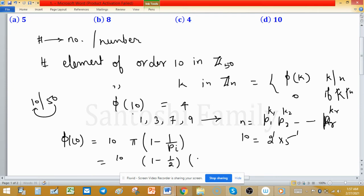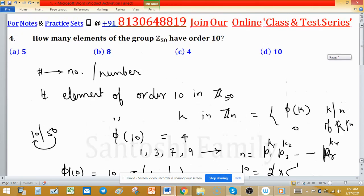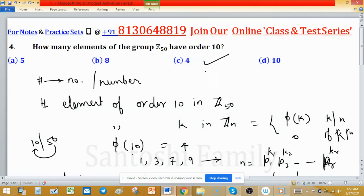This equals 10 times 1/2 times 4/5. The 5 and 2 give 10, which cancels out with 10, so the remaining is 4. So the option is true.